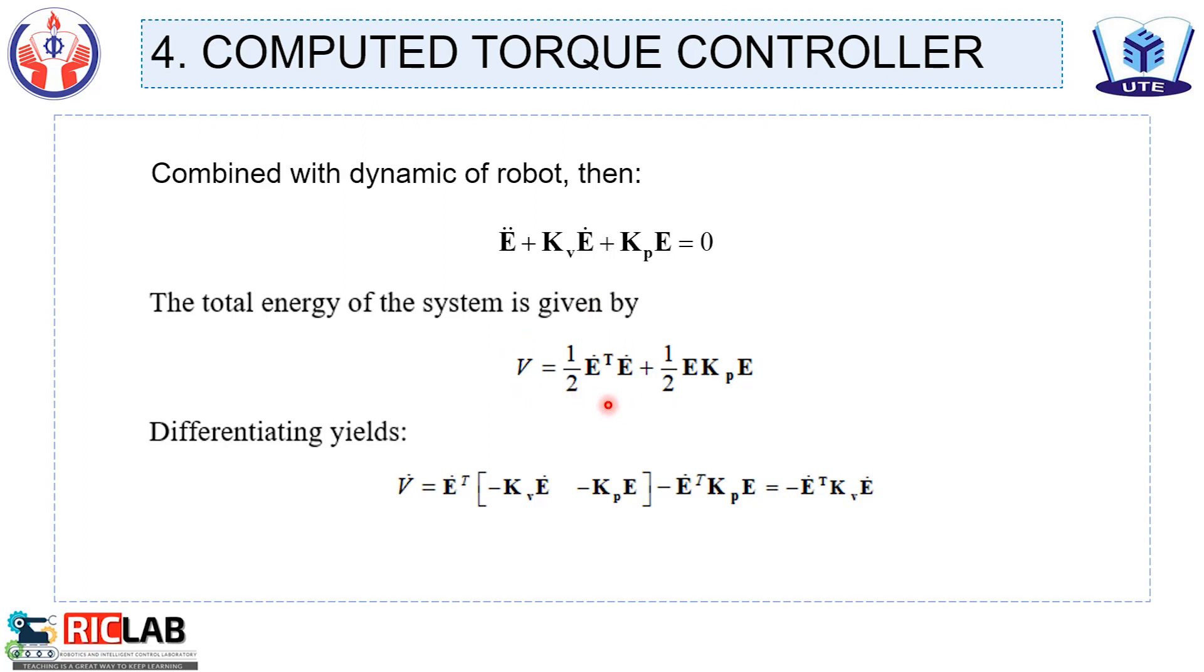With V is always positive. Differentiating V, we have V dot and the V dot is always negative.